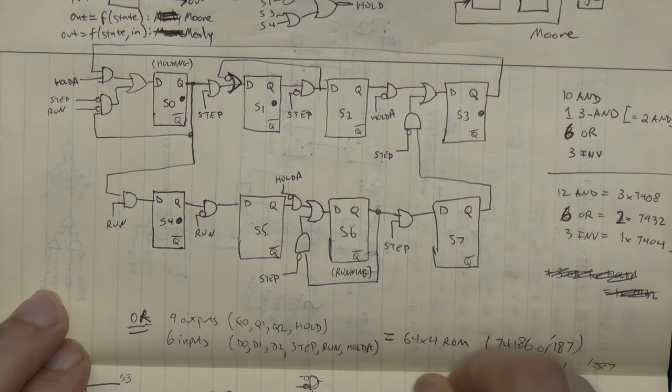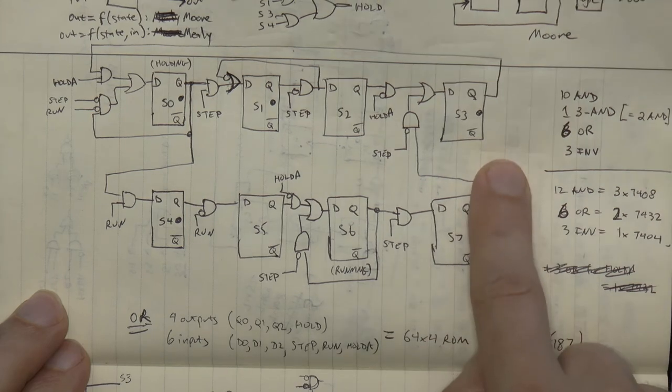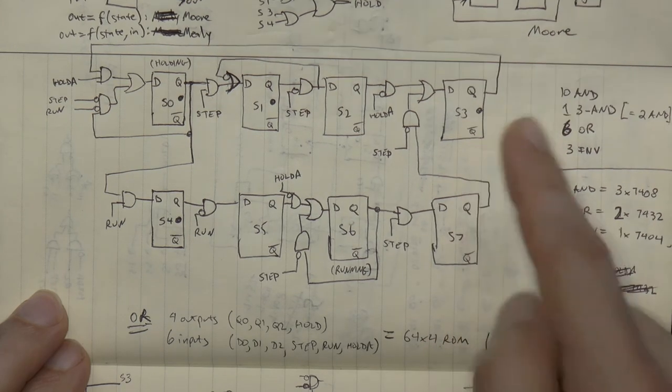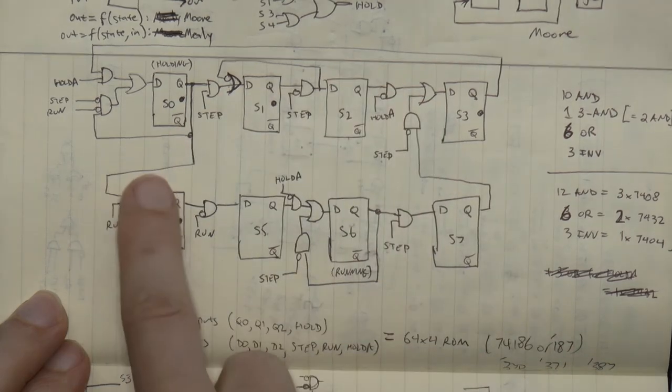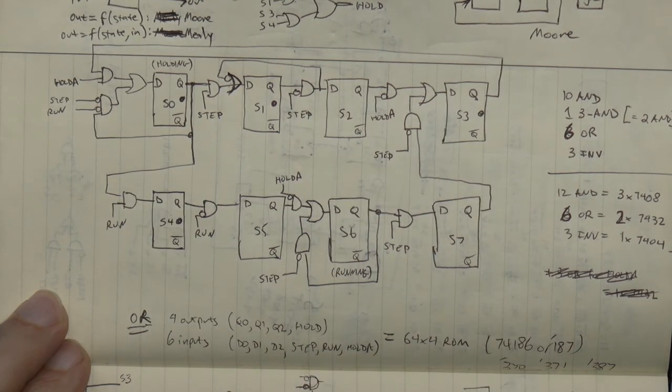Ignoring this bottom part, where the processor turns hold acknowledge off, I go to state 3, which immediately asserts hold again. The CPU acknowledges hold, and I go back to state 0. That single steps the CPU.